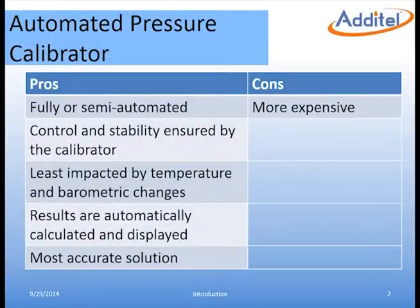Although the equipment used is more costly than the previous examples, this method can be fully or semi-automated depending on the DUT. Measurements are controlled and stability is ensured by the calibrator. The 761 is much less influenced by environmental changes than the previous example and the results are automatically displayed and calculated.